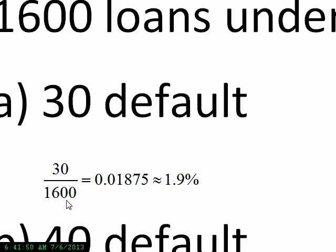you'll have 30 out of 1,600, which is 0.01875, or approximately 1.9% default rate.